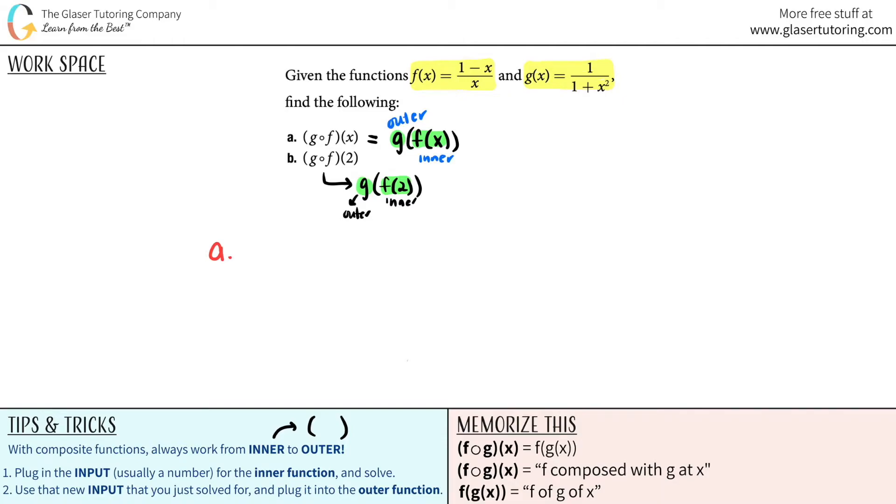So for a, let's get down to it. I'm just going to write the notation that I like, g f of x. So now for the first thing, you're going to plug in the input, which is usually a number, for the inner function and use your algebra and solve. However, for this my inner function, which is f of x, there's no number input. They told us that f of x was 1 minus x over x.